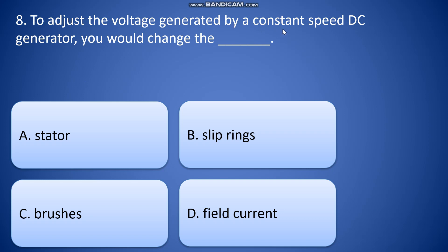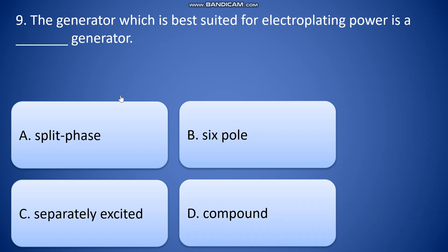To adjust the voltage generated by a constant speed DC generator you will change the blank: stator, slip rings, brushes, and field current. So the answer will be field current.